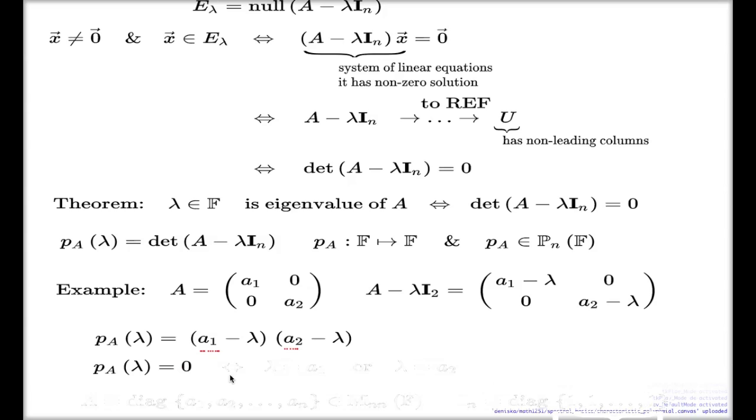So, P sub a of lambda equals zero when either lambda equals a1 or lambda equals a2. The same eigenvalues we guessed before, now we establish them analytically.